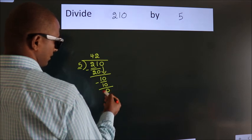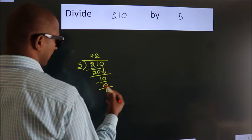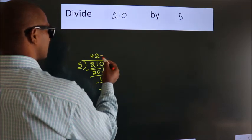We get 0. After this, no more numbers to bring down. And we got remainder 0. So this is our quotient.